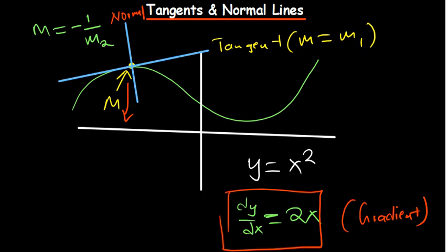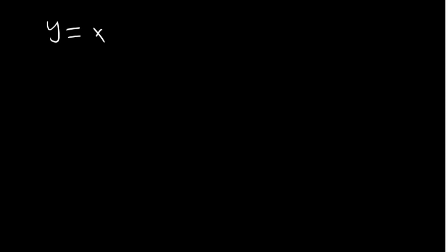I'll be using this relationship to help us find the equation of the tangent and the normal to a curve at any given point, just using the derivative and the x-coordinate given. Let's look at an example: consider y equals x squared, and the coordinate is the point (3, 9). We need to find the tangent and the normal at this given point.